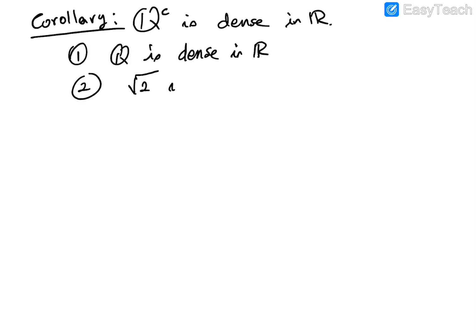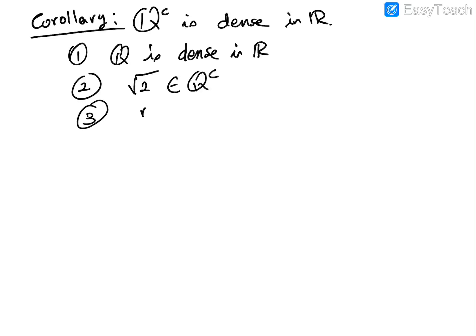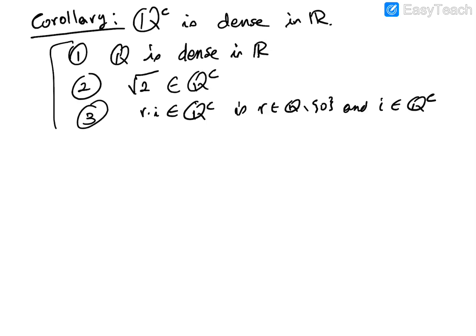So the square root of 2 belongs to the complement of Q. And three, we'll use that when you multiply a non-zero rational by an irrational, you get an irrational. You multiply square root of 2 by a rational, you get irrational, unless R is zero. So rational times irrational is irrational — that's an exercise in the book. If R is rational and non-zero, and I is irrational, then the product of a non-zero rational and an irrational is irrational. We're going to use these to prove the result.